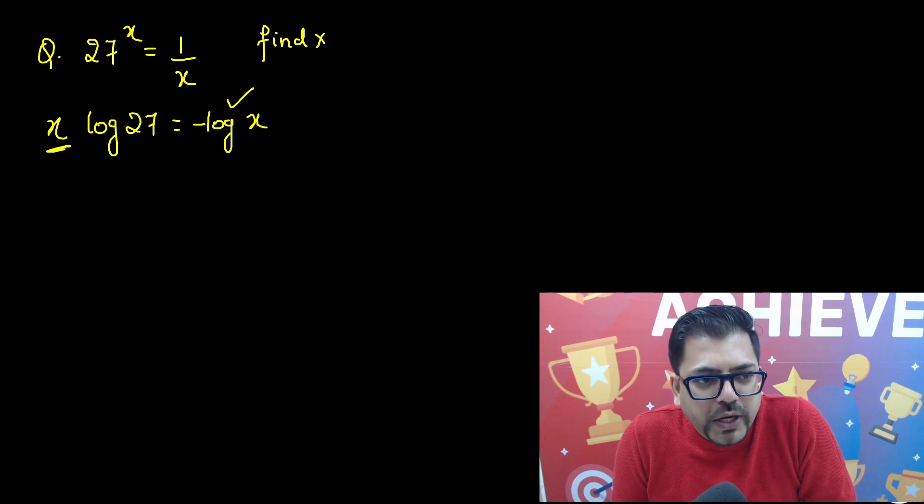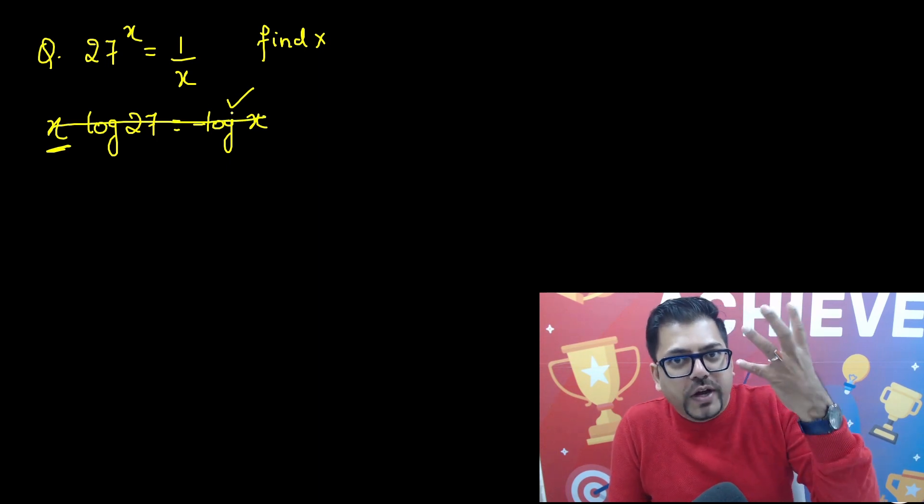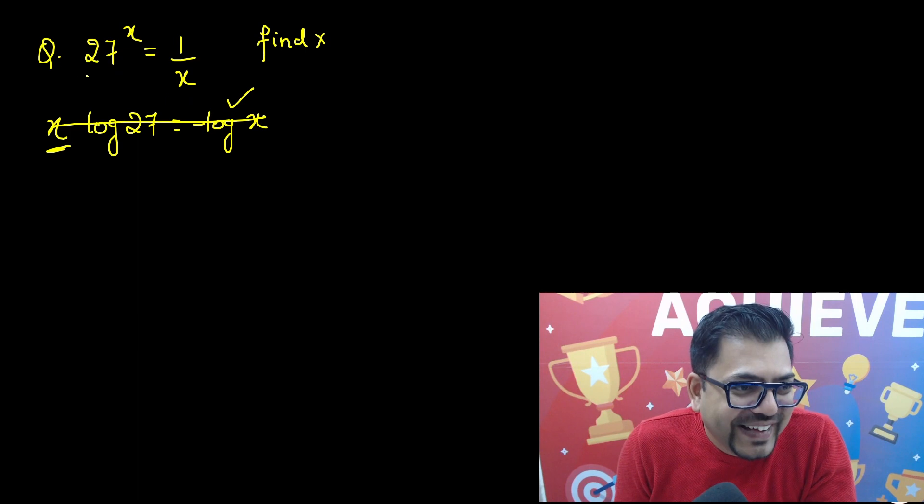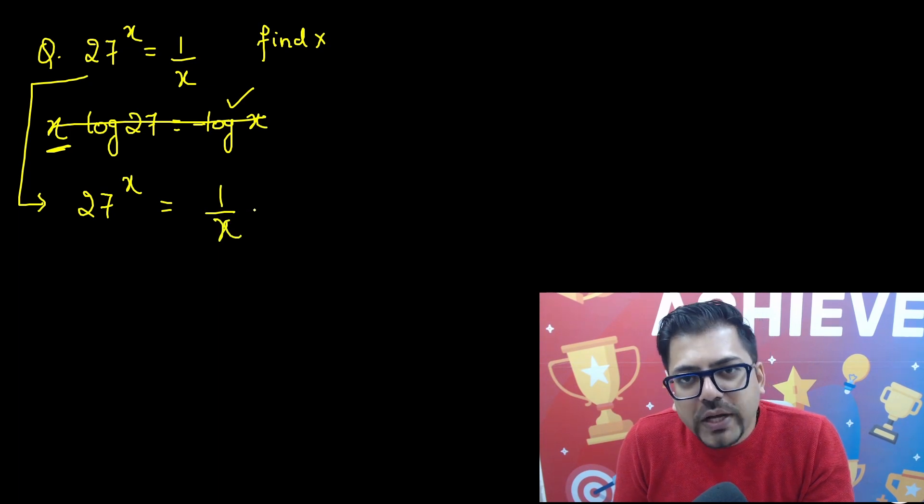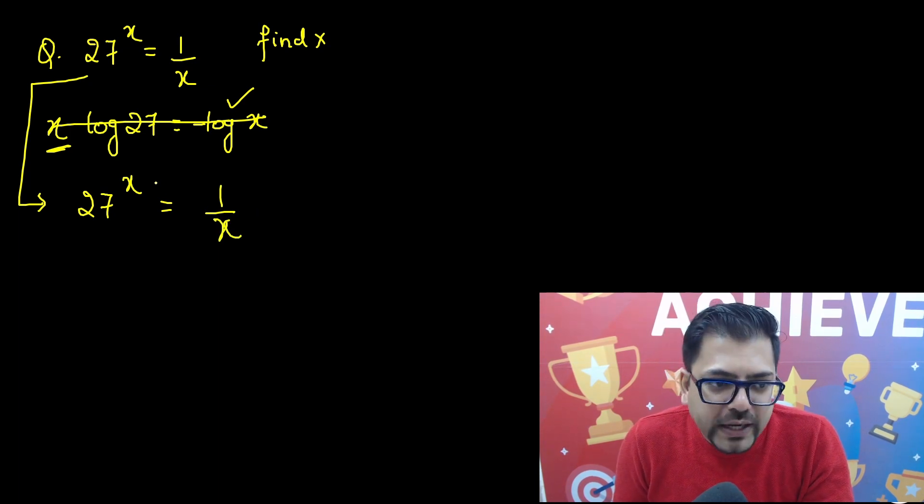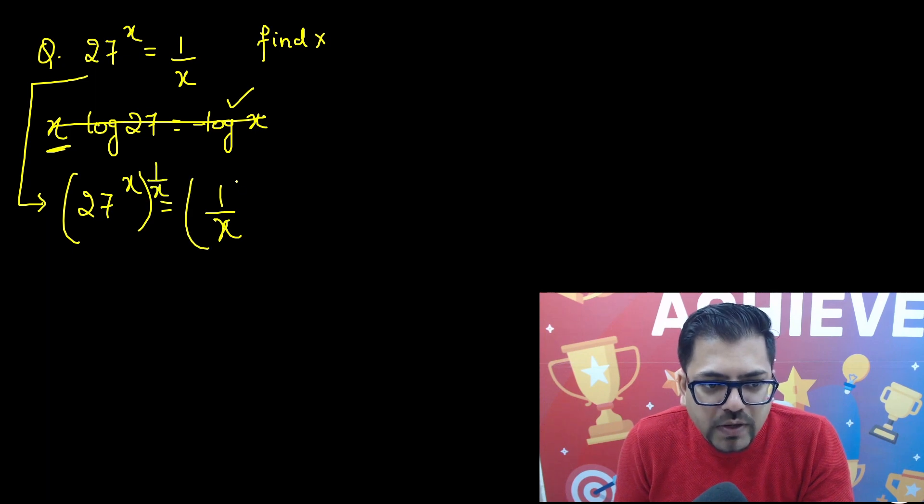Not possible. So again, you will have to come up with some innovative idea. Kuch toh dimaag lagana padega. Toh, can we do one thing that if we have this 27 raised to power x and here we have 1 upon x, I want to take power of both sides. I want to take both sides a power of 1 by x. Here also 1 by x, here also 1 by x. Again, what's the benefit?